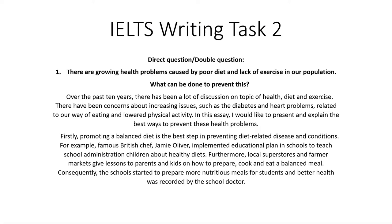Let's take a look at an IELTS Writing Task 2 example and identify the article mistakes. It's a direct question essay: 'There are growing health problems caused by poor diet and lack of exercise in our population. What can be done to prevent this?' I've written: 'Over the past 10 years, there has been a lot of discussion on topic of health, diet and exercise. There have been concerns about increasing issues such as the diabetes and heart problems related to our way of eating and lowered physical activity. In this essay, I would like to present and explain the best ways to prevent these health problems.'